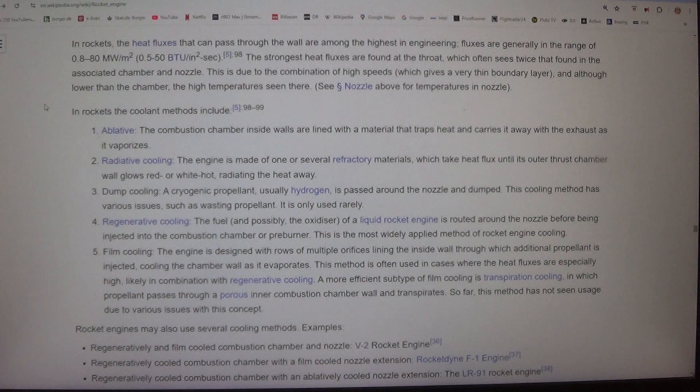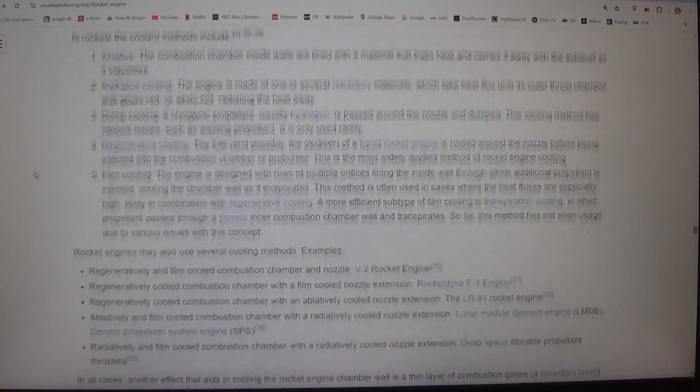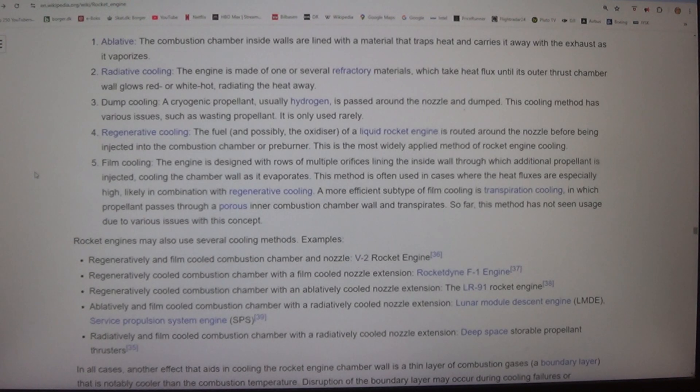In rockets, the coolant methods include: One, ablative - the combustion chamber inside walls are lined with a material that traps heat and carries it away with the exhaust as it vaporizes. Two, radiative cooling - the engine is made of one or several refractory materials which take heat flux until its outer thrust chamber wall glows red or white hot, radiating the heat away. Three, dump cooling - a cryogenic propellant, usually hydrogen, is passed around the nozzle and dumped. This cooling method has various issues such as wasting propellant. It is only used rarely.